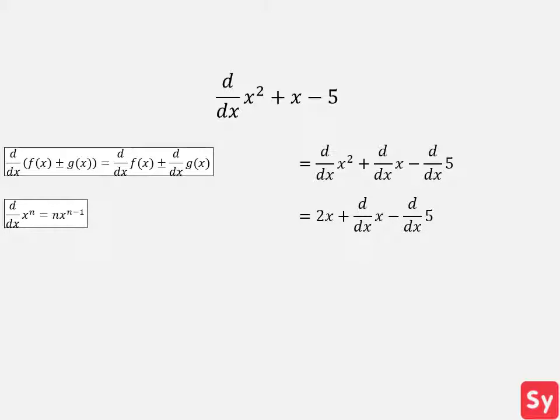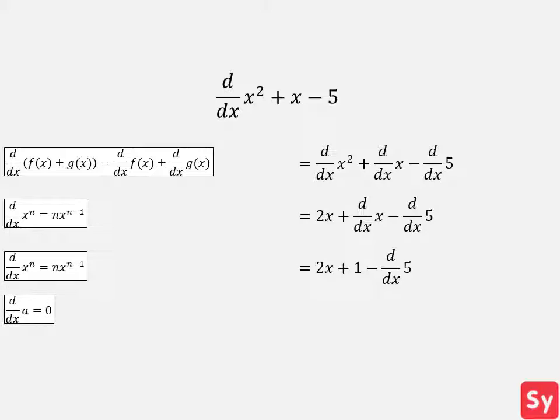Next we will compute the derivative of x using the power rule. This equals 1. And finally, we compute the derivative of 5 using the constant rule. This equals 0. We simplify this and get 2x plus 1, our answer.